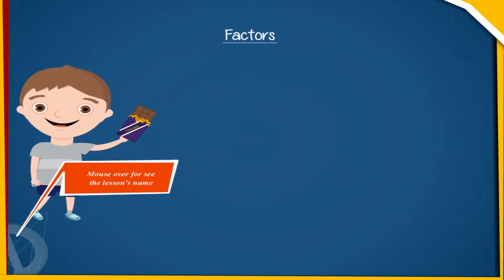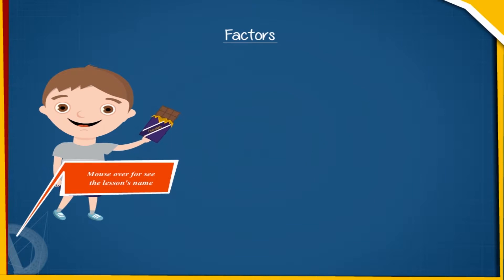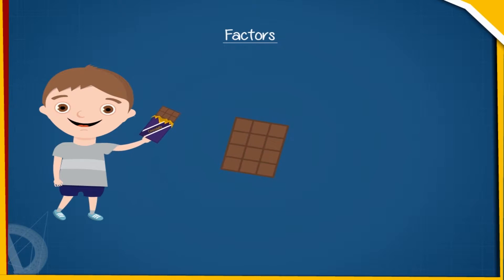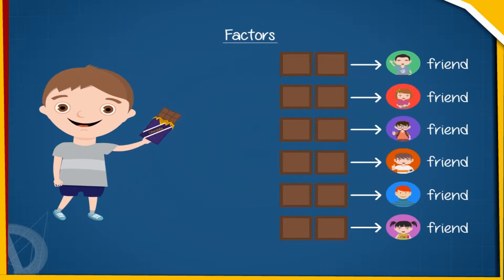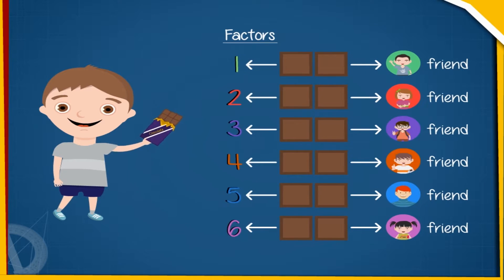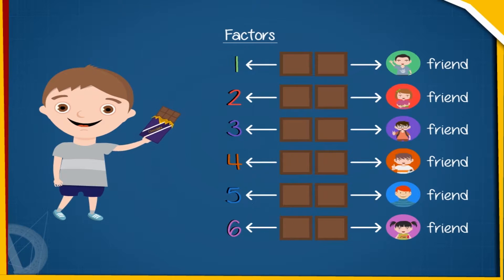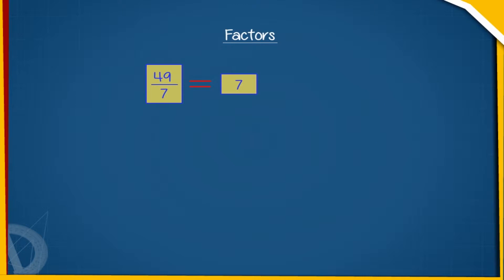Factors. Rohan has a chocolate bar with 12 pieces. He gives 2 pieces each to 6 of his friends and hence the chocolate is divided equally without any remaining piece. In the same way...